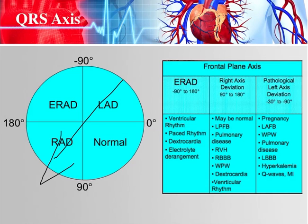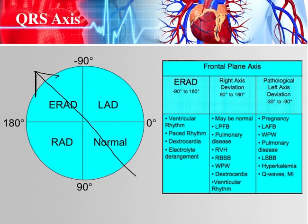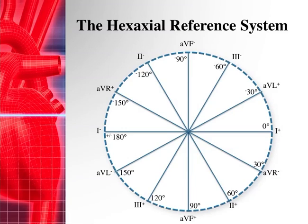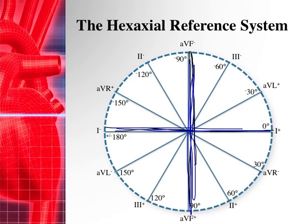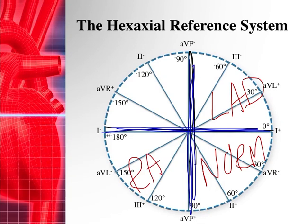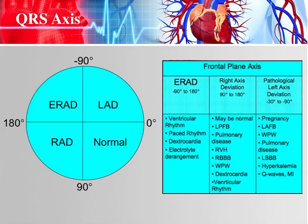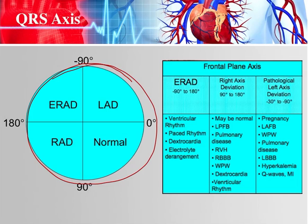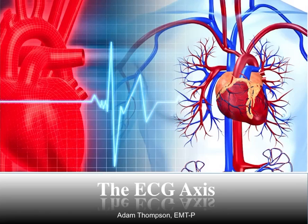Right axis deviation is when the QRS axis heads in this direction; left axis deviation is in that direction; and extreme right axis deviation — also called no man's land — is when it heads the other way. You can separate the hexaxial diagram into quadrants: normal, left axis deviation, right axis deviation, and extreme right axis deviation. This is important because there are all sorts of pathologies that cause axis deviation.